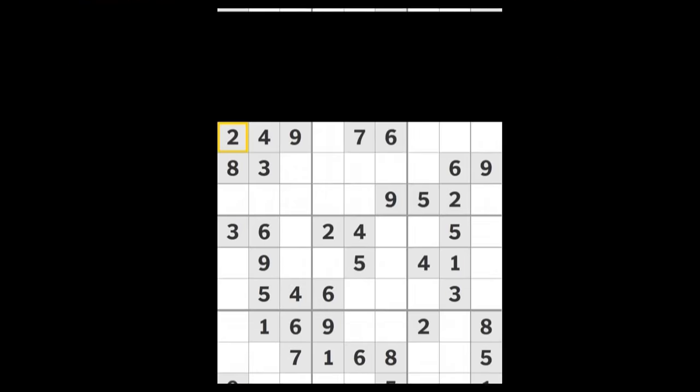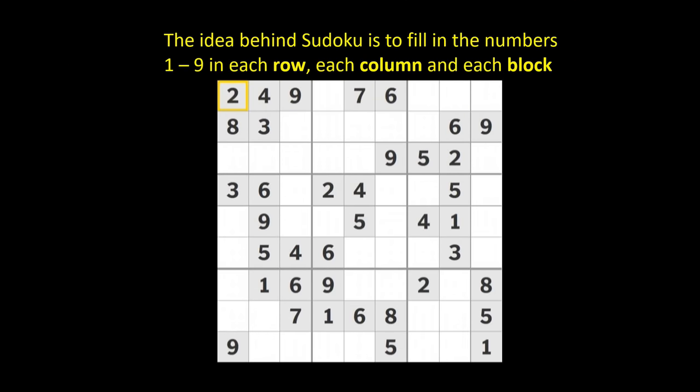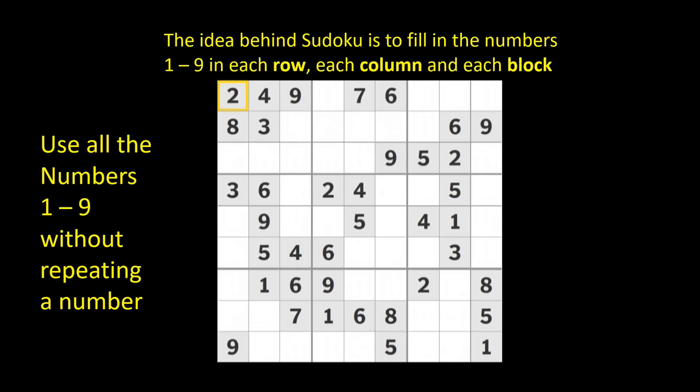As you may know, the idea behind Sudoku is to fill in the numbers one through nine in each of the rows going across, there are nine rows, in each of the columns going down, there are nine columns, and in each of the blocks, there are nine blocks. The numbers one through nine must be used without ever repeating a number more than once.